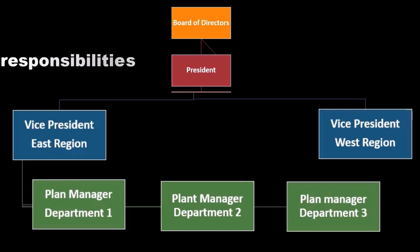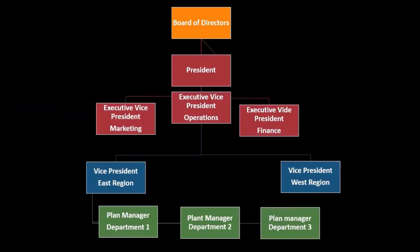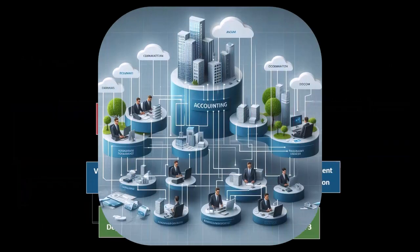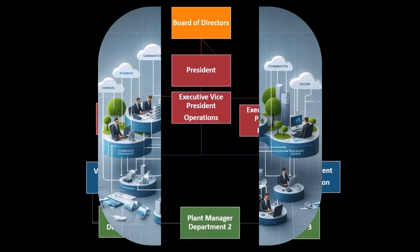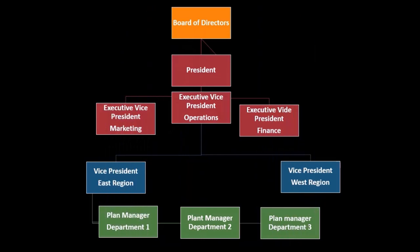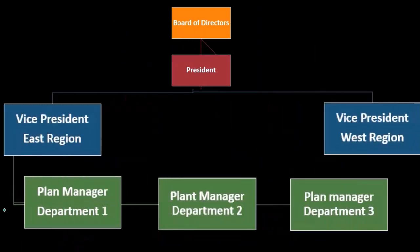The only way to really cover that is to have a specific organizational chart with very defined roles assigned to different units within the organization, and then have appropriate measures for our objectives and the measurement of performance — whether those objectives have been met by the departments. When considering responsibility accounting reporting, we can see that the lower levels are going to have fewer controllable costs.